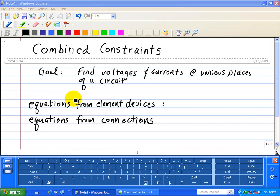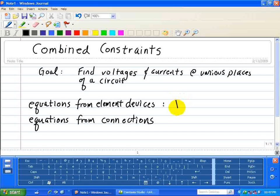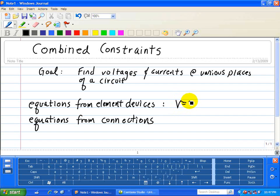One equation is associated with element devices like resistors, which have a relationship called Ohm's law, V equals IR. The other equations come from connections using Kirchhoff current law and Kirchhoff voltage laws.